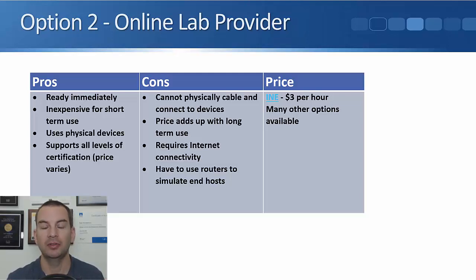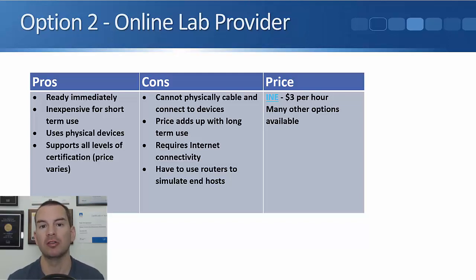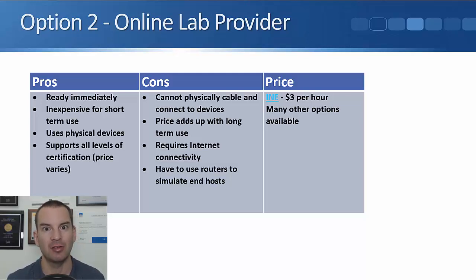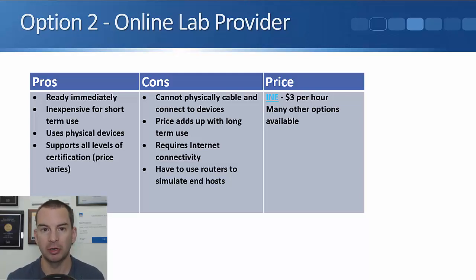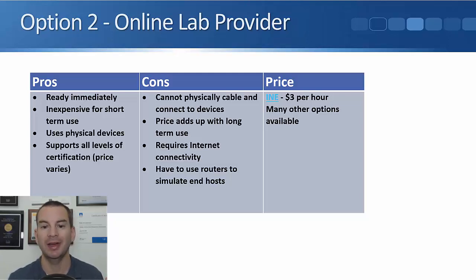Also, you have to use routers to simulate end hosts. Most online lab providers won't include PCs like Windows or Linux boxes in the lab. You can use a router and pretend it's an end host, but it's not exactly the same. If you build your own physical lab you can connect actual end hosts just like in the office. However, for passing the CCNA, an online lab provider is still a really good option and will give you everything you need.